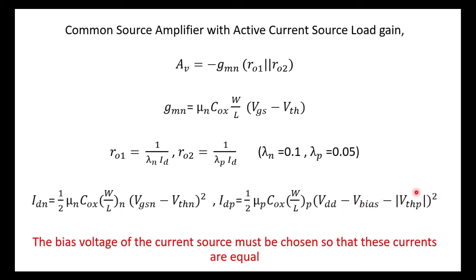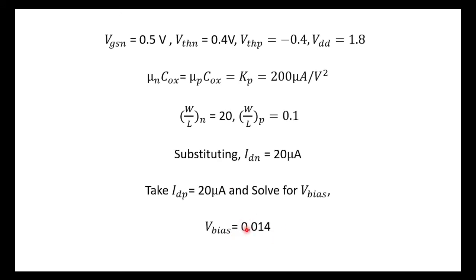When calculating Vbias, please make sure that we have to take the root, right? When we have a square here, we have to take a root. So it gives a plus or minus, but in this case it gives a plus or minus 0.014. But the minus doesn't work, only the plus works, so Vbias becomes 0.014.